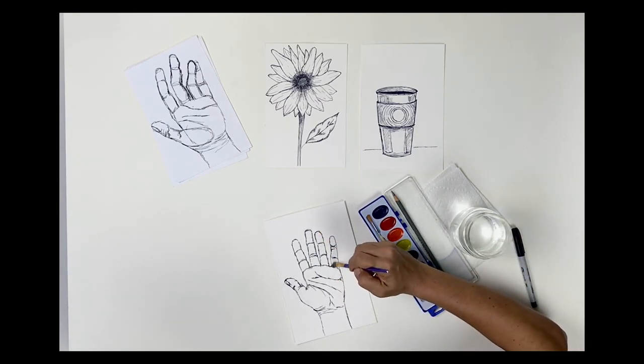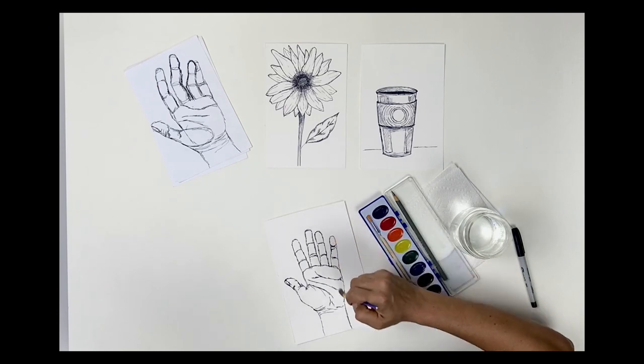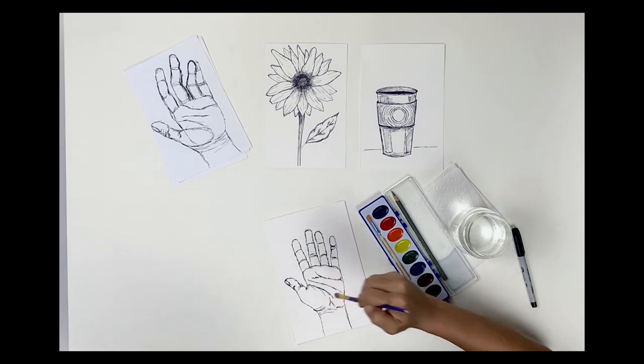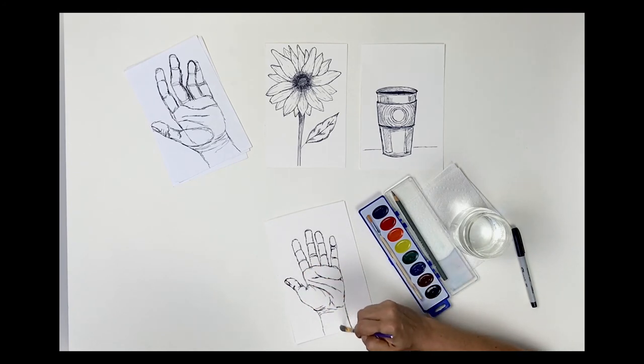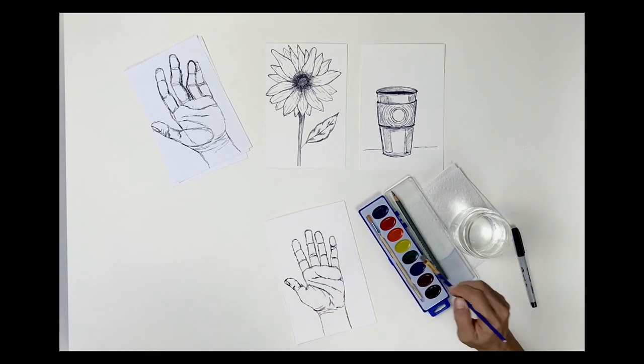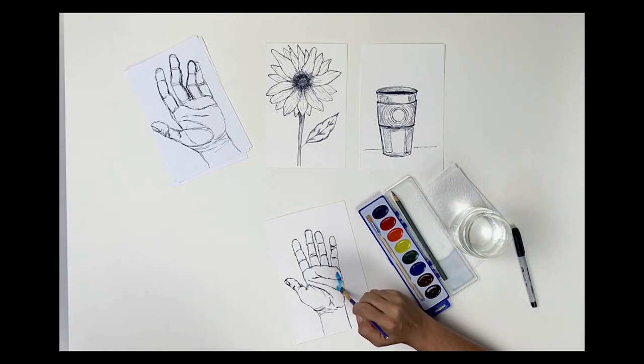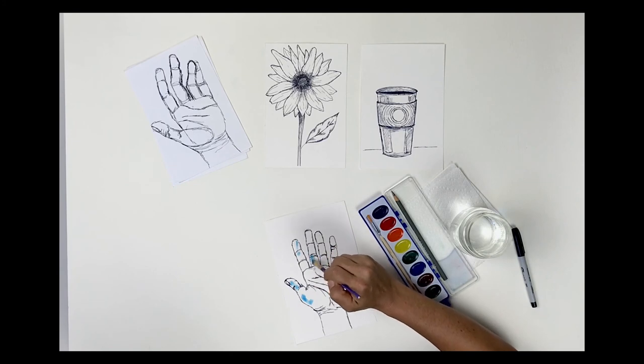Once my paper is wet, I can use these watercolors to add some abstract color to my design. The watercolor will only bleed as far as the wet paper allows it to go. I'm going to get abstract, and I'm just going to throw in some different colors here.